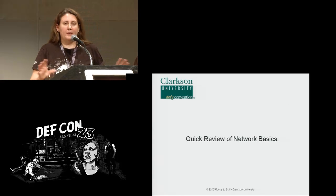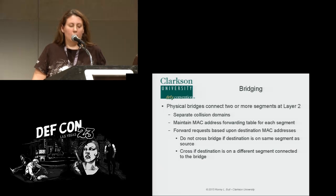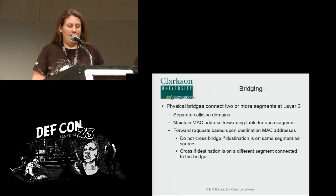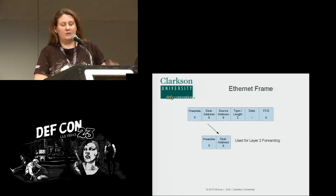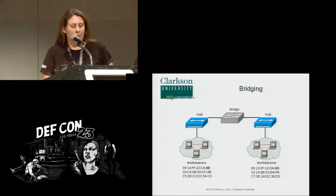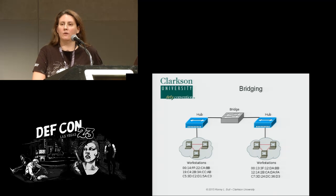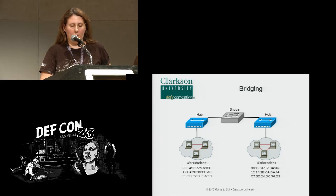A quick review of some networking basics. Physical bridges are devices that connect two or more segments at layer two — they separate collision domains and maintain MAC address forwarding tables, forwarding frames based on the destination MAC address. Here we see the layer two Ethernet frame — the decision is made based on the destination address. In the classic bridge picture, if a frame is destined for something in the same domain it stays put; if destined for another domain it's forwarded according to the table.